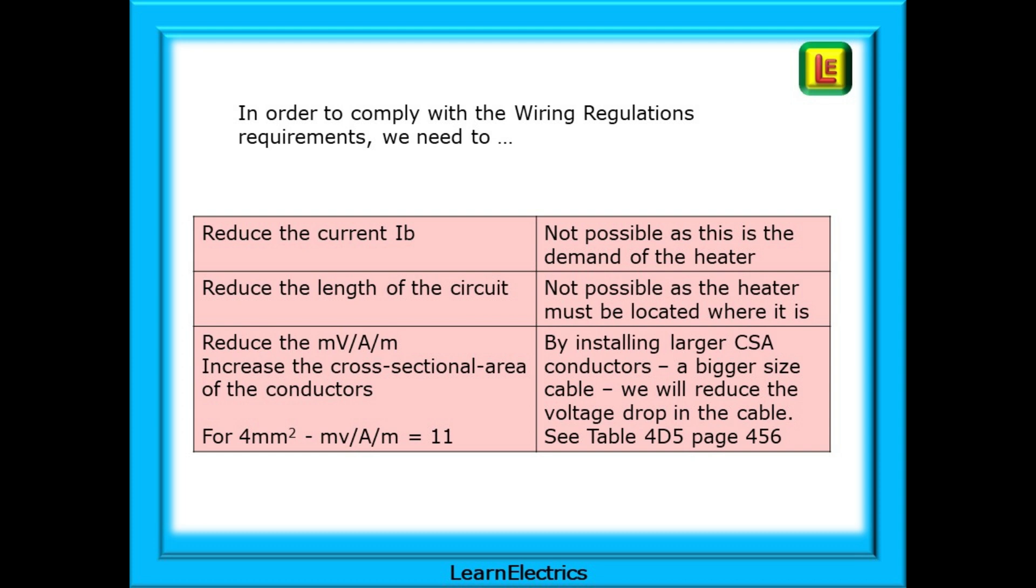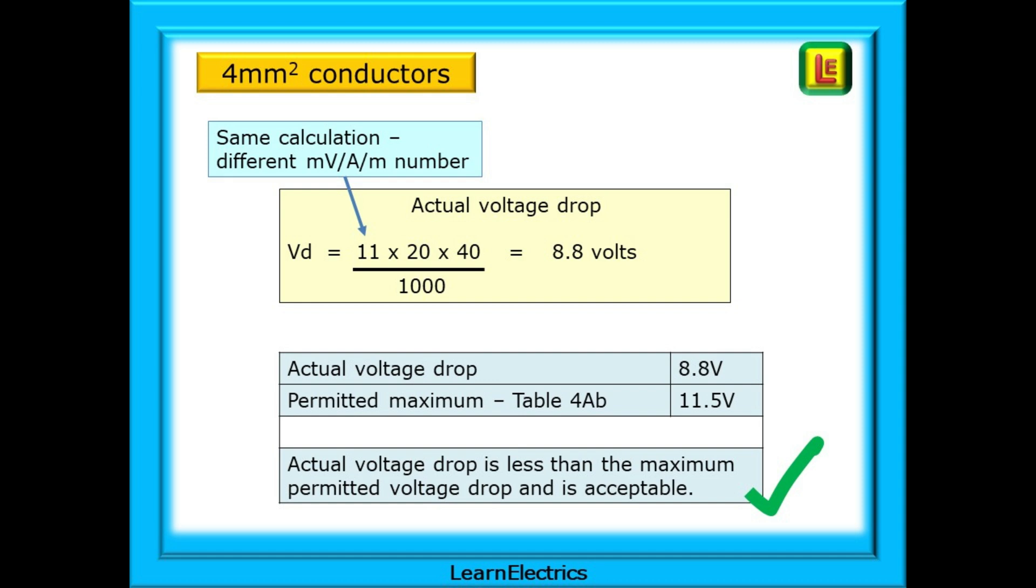Is it possible to reduce the MVAM number? Yes, it is. We can do this by increasing the cross sectional area of the conductors. By installing larger CSA conductors, a bigger size cable, we will reduce the voltage drop in the cable. See table 4D5 page 456 and find 4 millimetres on the left column. The corresponding entry in the rightmost column shows that for a 4 square millimetre conductor the MVAM is 11. Let's put that number into the calculation and see what answer we get. The same calculation but now with 11 for the MVAM number. This is a bigger cable size so the voltage lost in the cable will be reduced. Putting the numbers into a calculator we have an actual voltage drop of 8.8 volts for the 4 millimetre conductors. This is less than the permitted maximum of 11.5 volts and therefore an acceptable value for this circuit.